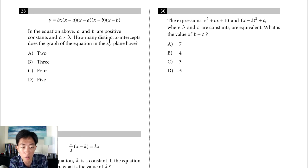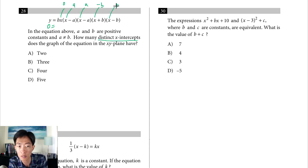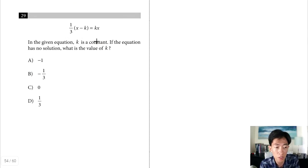Question 28: y equals x times (x minus a)² times (x plus b)² times (x minus b)², where a and b are positive constants and a ≠ b. Find the number of distinct x-intercepts. Setting y equals 0: x equals 0, x equals a, x equals negative b, and x equals positive b — four distinct roots. The answer is 4.